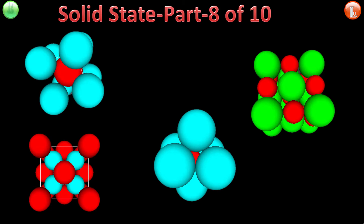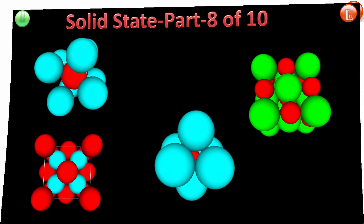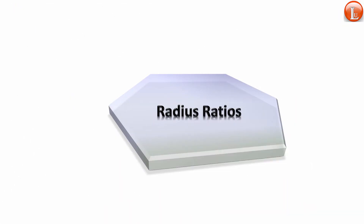Hi everyone, this is Kalyan Kumar and welcome to my channel Chemistry Tutorials. We are doing a lot of videos in solid state, and today we have part 8 of 10. In the previous one we talked about voids — both octahedral and tetrahedral — and in part 8 we are going to look at the radius of the cation and the radius of the anion, or the radius of the smaller to the radius of the larger atom, to occupy a certain void. We call this the radius ratio.